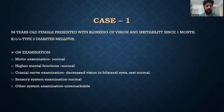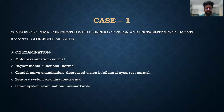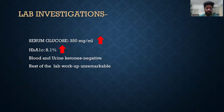The first case is a 56-year-old female who presented with blurring of vision and irritability since one month. She was a known case of type 2 DM. On examination, motor examination was normal, higher mental functions were normal, cranial nerve examination showed decreased vision in bilateral eyes, rest of the cranial nerves were normal, sensory system investigation was normal, and other system examinations were unremarkable.